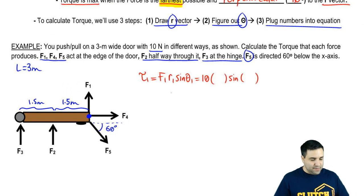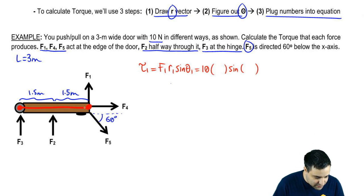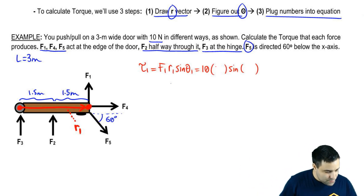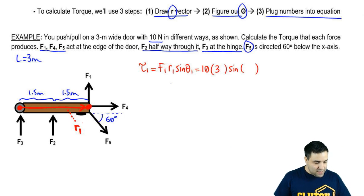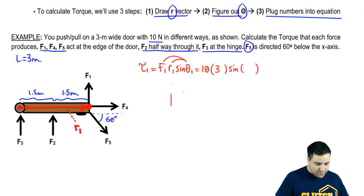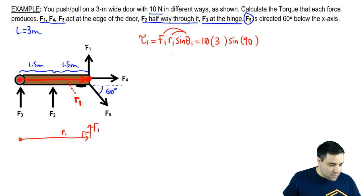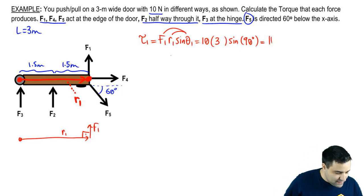The R vector goes from the axis of rotation to the point where the force is applied, which is at the edge, so R1 equals three meters. F1 points perpendicular to R1, so the angle between them is 90 degrees, and sine of 90 is 1. Therefore torque 1 equals 10 times 3 times 1, which equals 30 Newton meters.